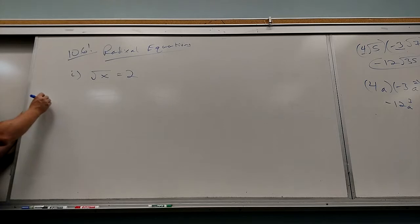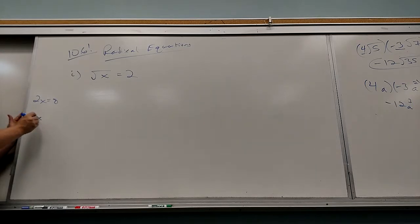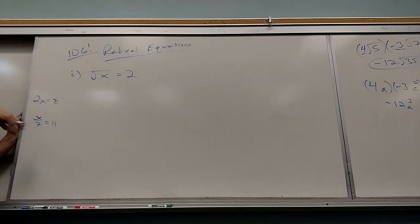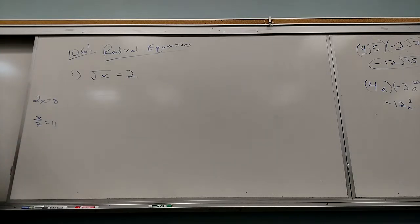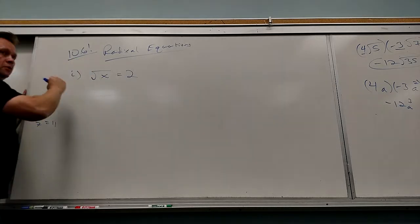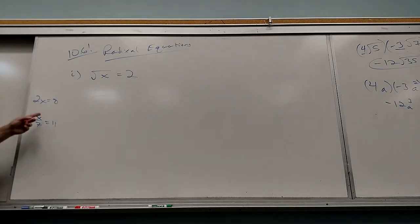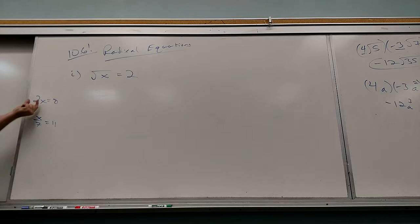If I had 2x equals 8, you'd divide because the opposite of multiplication is division. If I had x over 7 equals 11, you'd multiply because the opposite of division is multiplication. What's the opposite of square rooting? Squaring! The opposite of a square root is squaring — they kill each other. So what am I going to do to both sides? The opposite of what's keeping x stuck. Square root? Kill it — square both sides.